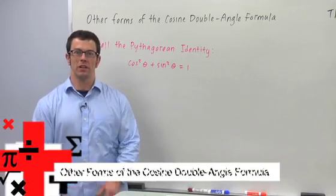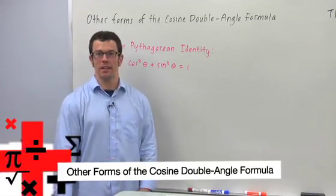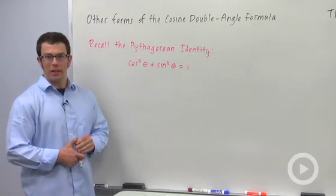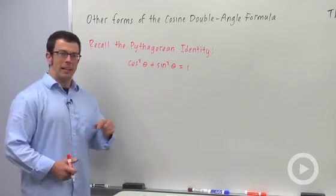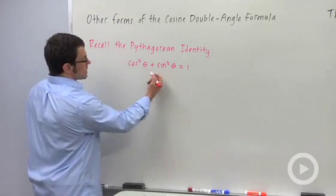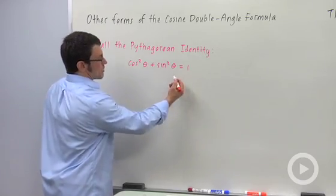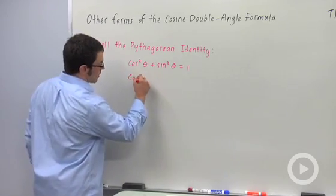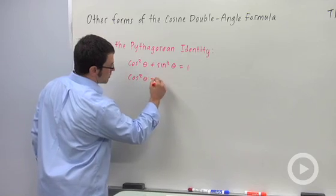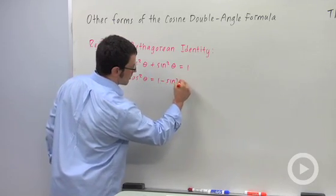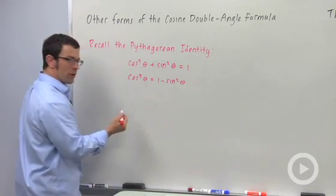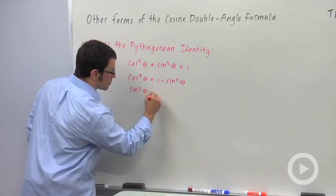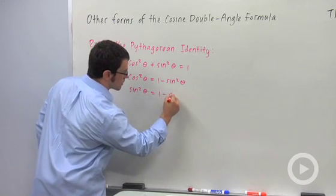I want to talk about other forms of the cosine double angle identities. Let's recall the Pythagorean identity and the two other forms of it. Cosine squared plus sine squared equals one can also be written as cosine squared theta equals one minus sine squared theta, or sine squared theta equals one minus cosine squared theta.